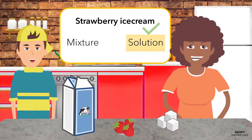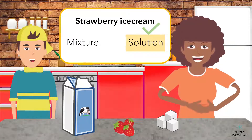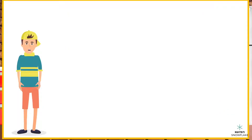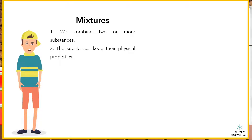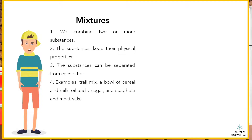Let's review what you've learned today. Mixtures are when we combine two or more substances. The substances keep their physical properties and can be separated from each other. Some examples of mixtures in the kitchen are trail mix, a bowl of cereal and milk, oil and vinegar, and spaghetti and meatballs.